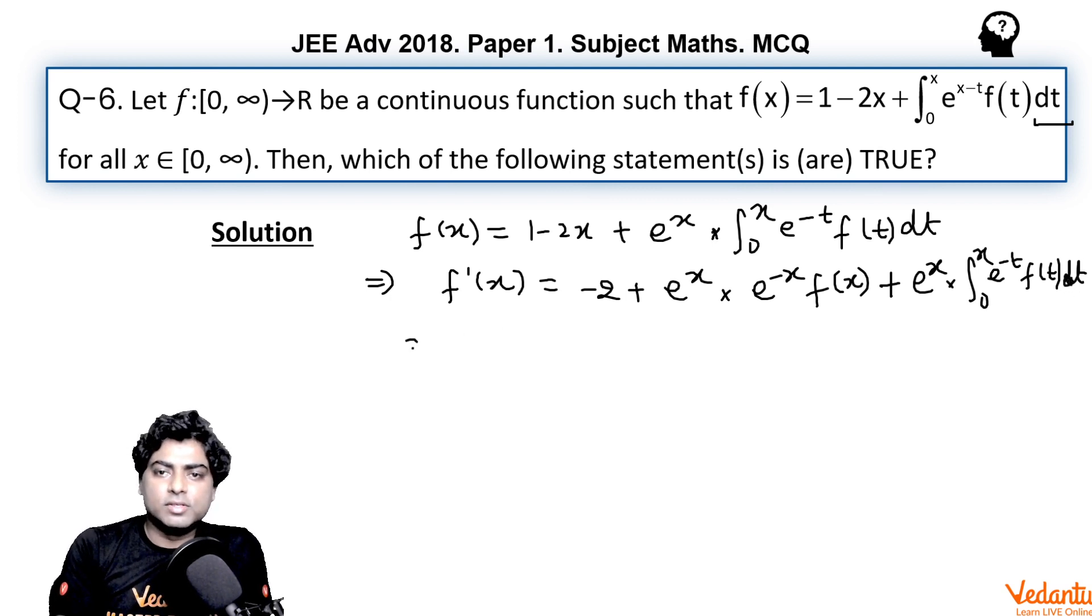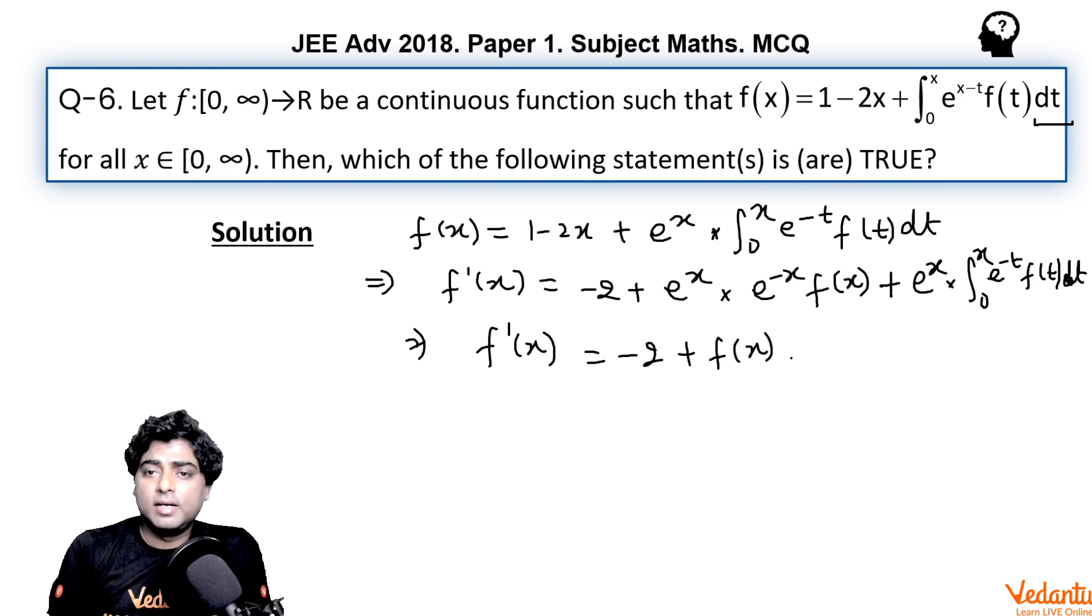So if we simplify it further, we can write f'(x) = -2 + f(x), because e^x times e^(-x) is 1, plus the last term is e^x times same as what is given in equation 1. So from equation 1, we can write it as f(x) - 1 + 2x, isn't it? From equation 1.